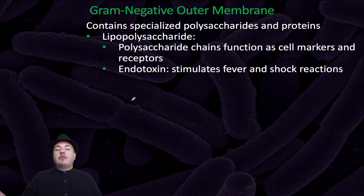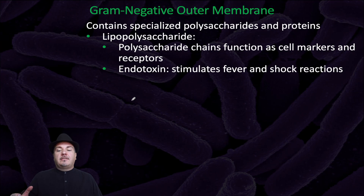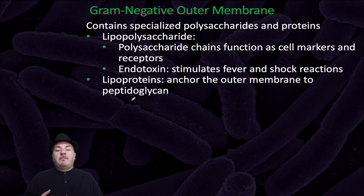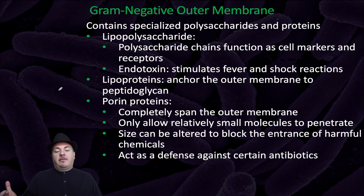Gram-negative bacteria have an outer membrane that gram-positive bacteria don't have. It contains specialized polysaccharides and proteins. For example, it has lipopolysaccharides — polysaccharide chains that function as cell markers and receptors. These lipopolysaccharides can also act as endotoxins, which can stimulate fever and shock reactions whenever these bacteria infect humans. The outer membrane also contains lipoproteins, which anchor it to peptidoglycan, and porin proteins, which completely span the outer membrane and only allow relatively small molecules to penetrate. Pore size can be altered to block entrance of harmful chemicals, and it can act as a defense against certain antibiotics.